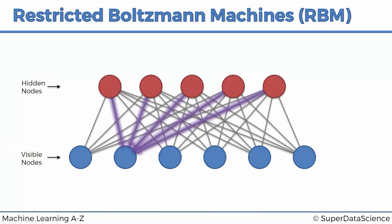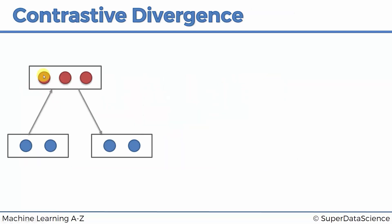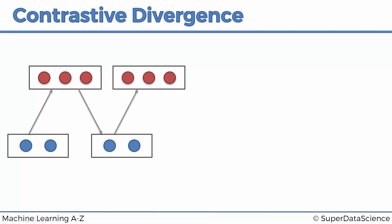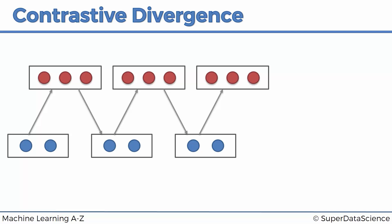So we do a first forward pass and backward pass. Then we feed the reconstructed input values back into the RBM again to get new hidden values, then reconstruct the inputs again — and again they won't be equal. We keep repeating: construct hidden values, reconstruct inputs, and so on. This whole process is called Gibbs sampling.